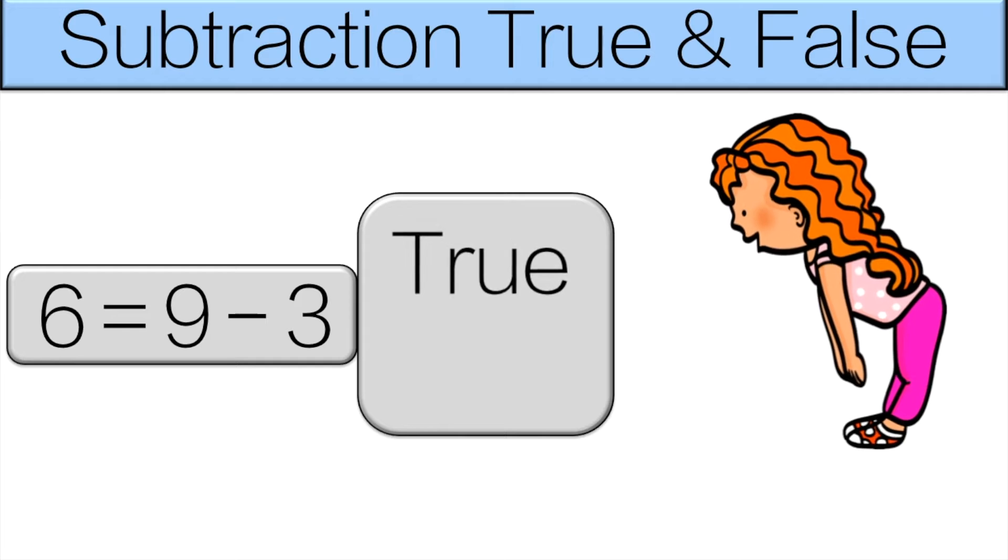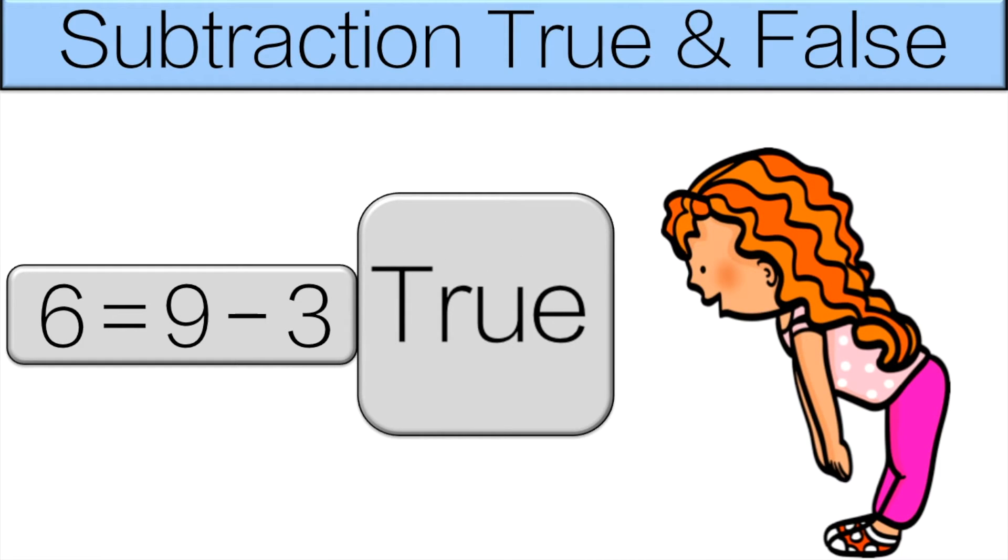It is true. 6 equals 9 minus 3. Do the forward bend pose for 10 seconds.